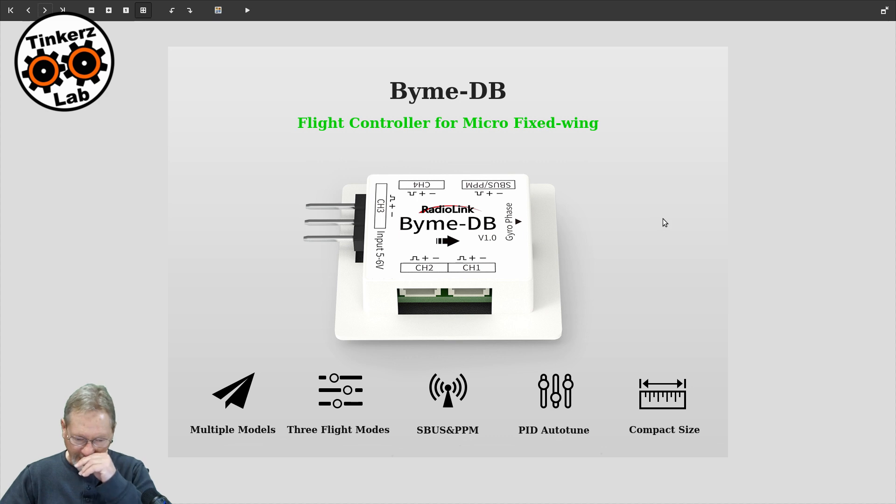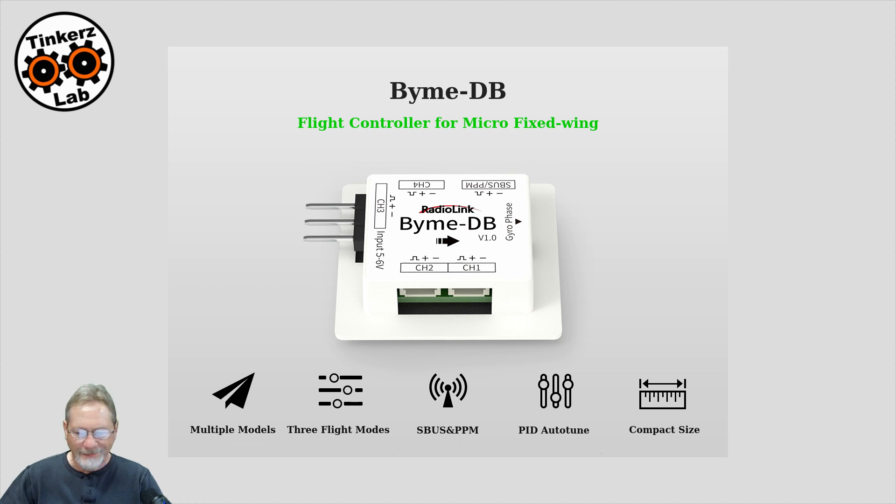So let's go ahead and look at some of the features here. Multiple models, as long as you have elevon mixing or a delta wing. Three flight modes, you get fully stabilized mode. You get gyro mode, which is just wind mitigation, and then full manual mode.